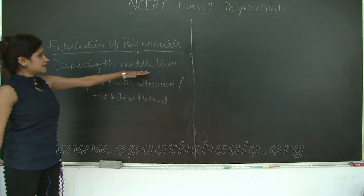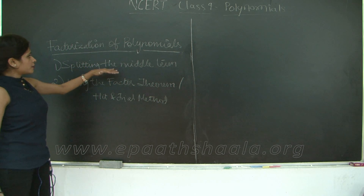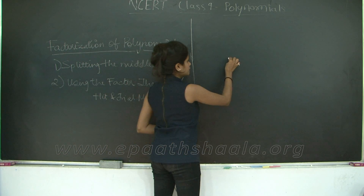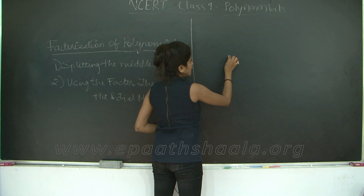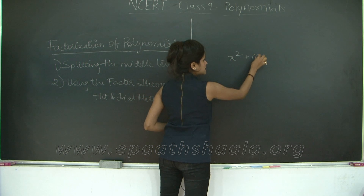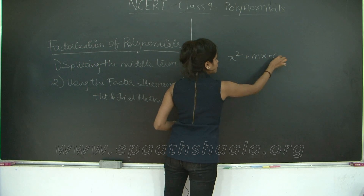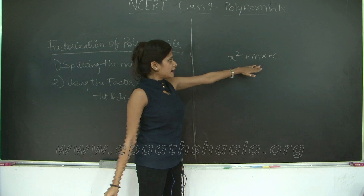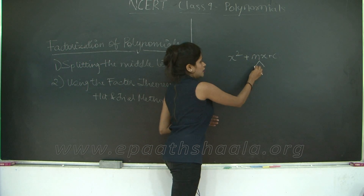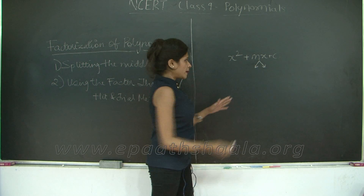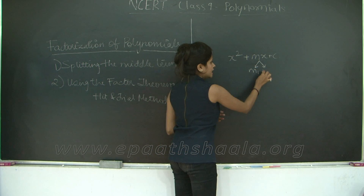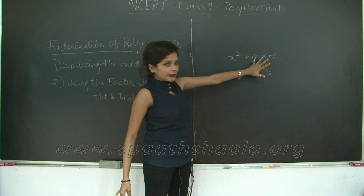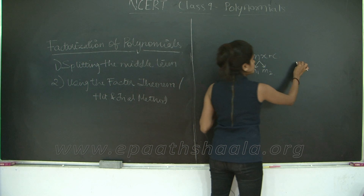So let's take a look at how to factorize a polynomial using the splitting the middle term method. Let's say you have a quadratic polynomial x squared plus mx plus c. Here m is the middle term. I am going to split m into two parts, m1 and m2, such that when you add m1 and m2 you get m, and m1 into m2 will give you c.